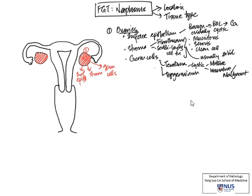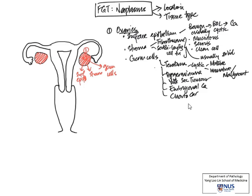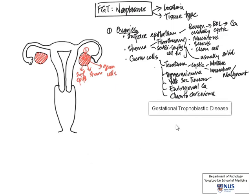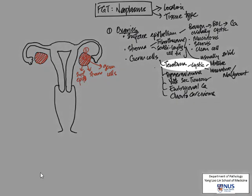We also have the dysgerminoma, which is essentially equivalent to the seminoma seen in males in testicular tumors. Another type of germ cell tumor would be the yolk sac tumor. We can also have embryonal carcinomas and finally choriocarcinomas. Choriocarcinomas can also occur in the uterus as part of gestational trophoblastic disease. Among the germ cell tumors, most of them are actually malignant, except for the mature cystic teratoma.